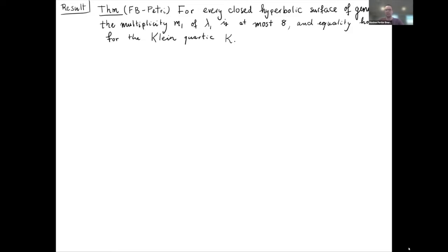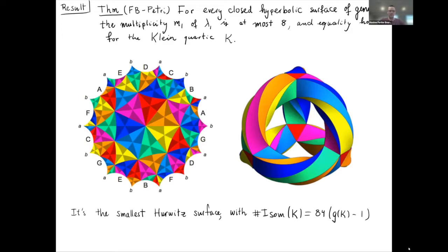I'm going to be talking about this specific result, which is joint work with Bram Petri. It says that for every closed hyperbolic surface of genus three — hyperbolic here means constant curvature minus one — the multiplicity, which I'll denote by m₁, of lambda one, the smallest positive eigenvalue of the Laplacian, is bounded above by eight. This is realized by the Klein quartic, which I'll denote by K throughout the talk.